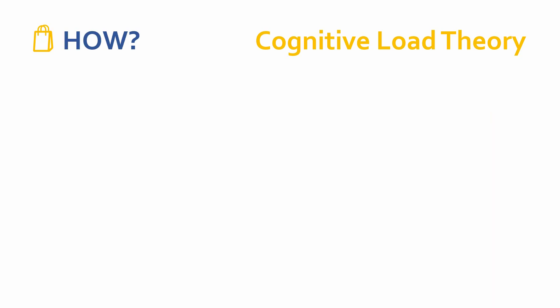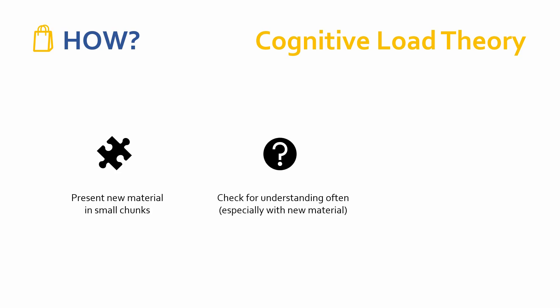So what are some strategies that might arise from an understanding of cognitive load theory? Very simply and quickly: you need to present new material in small chunks because of the processing required for new material. Secondly, you need to check for understanding often, especially with new material, to ensure that no misconceptions creep in and that students aren't dropping boxes on the way to their long-term memory. Finally, we need to reduce extraneous load through the clarity of our instruction — and there are lots of ways of doing that, including routine, dual coding, and other features.